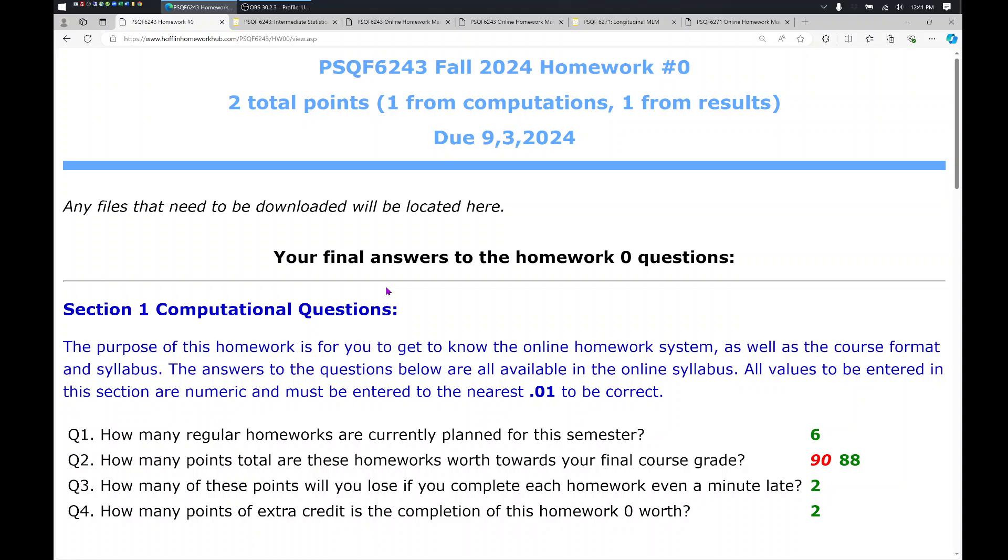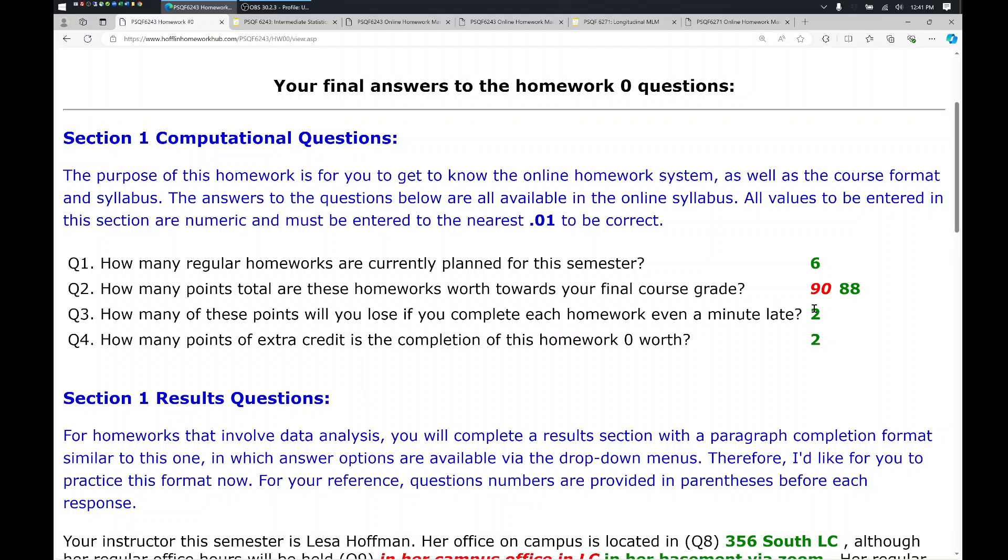So this is an example of a homework that is past the due date where all feedback is available. So in the computational questions, any incorrect answers, the last entry that you saved, will be presented in red, bold, italic font, followed by the correct answer in regular, bold, green font. So this way, even if you didn't get something correct, you can hopefully work backwards given the correct answer to figure out where you made your mistake. This also is highlighting the fact that you don't have to have all of the answers correct to submit.